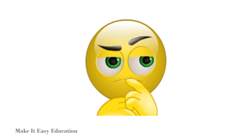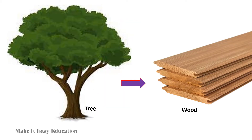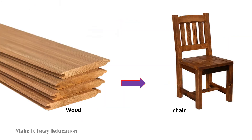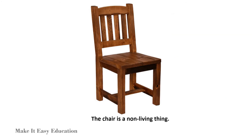A tree is a living thing, and we get wood from a tree. A chair is made from the wood. Is the chair a living thing or a non-living thing? The answer is, the chair is a non-living thing.